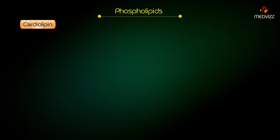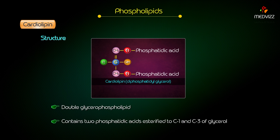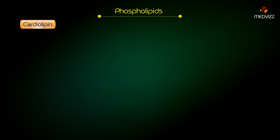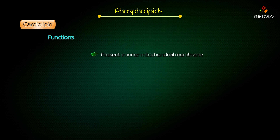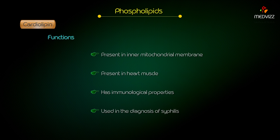Cardiolipin — structure. It is a double glycerophospholipid. It contains two phosphatidic acids esterified to C1 and C3 of glycerol. Functions: it is present in the inner mitochondrial membrane and also in heart muscle. It has immunological properties and is used in the diagnosis of syphilis.